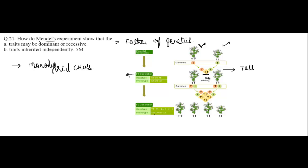The trait of the other parent plant — that is, dwarfness — did not show up in the progeny of the first generation. As you can see in the F1 generation, all the plants are tall and there are no dwarf plants at all. So in this generation, the trait of only one parent plant, tallness, was expressed, while dwarfness did not show up in this progeny.